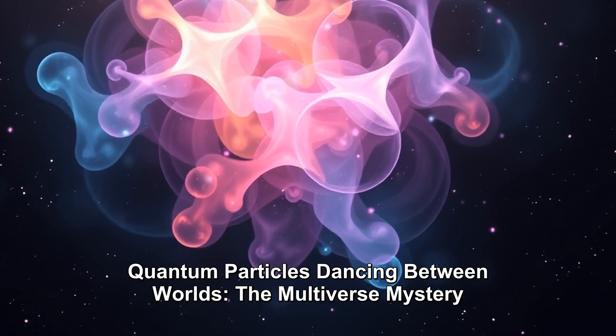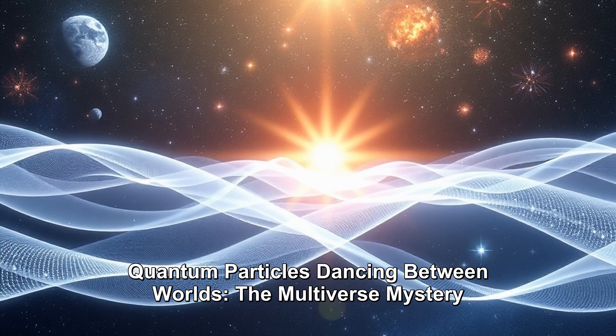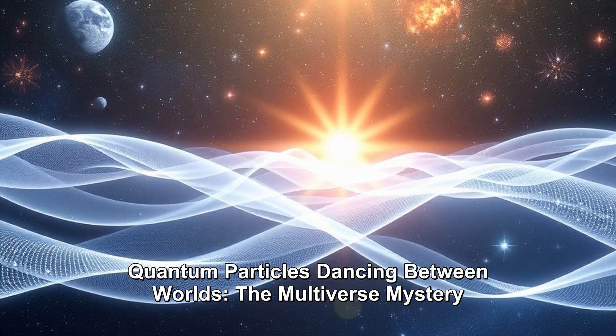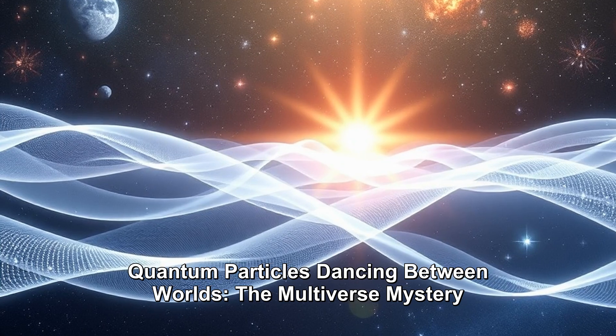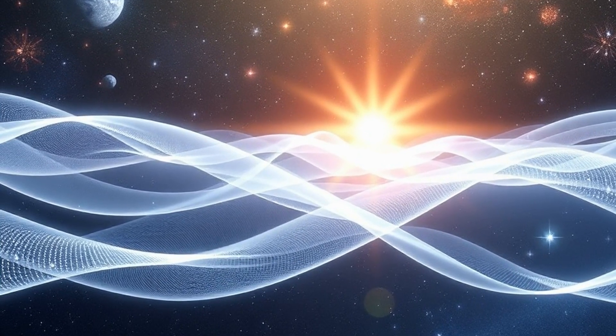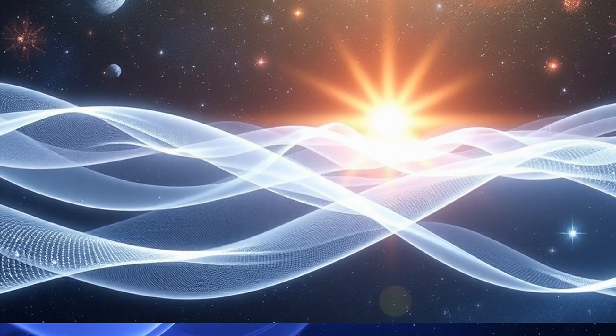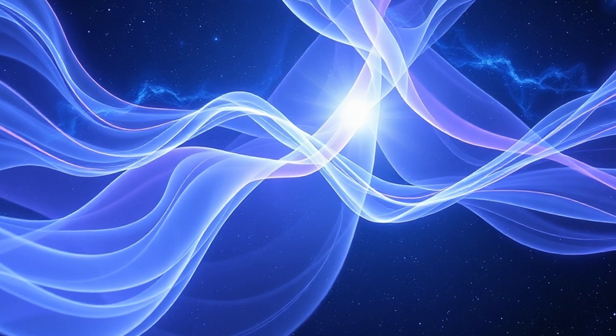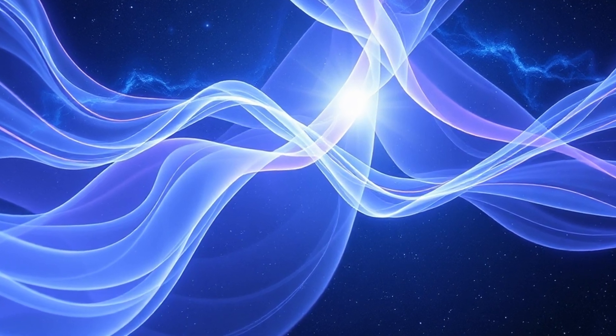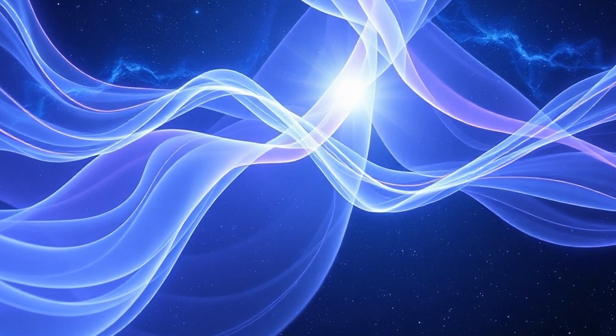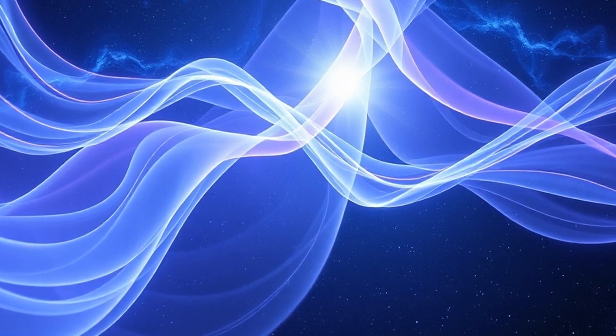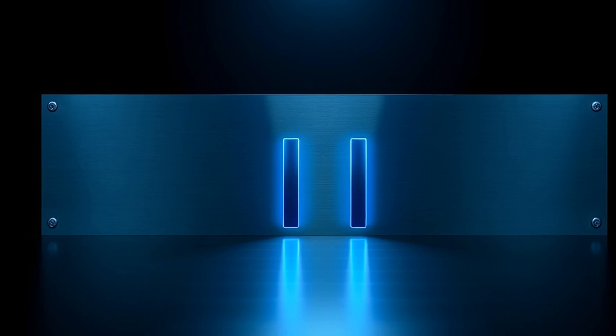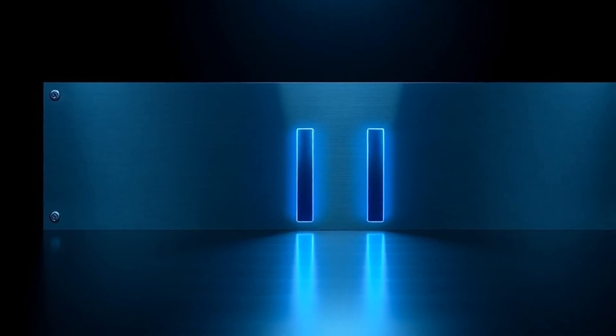The double-slit experiment might be the most amazing physics test ever done, and it gets even wilder when we think about parallel universes. Here's what happens. We shoot tiny particles, one at a time, through two slits in a screen. You'd expect them to make two simple lines on the back wall, right? But they don't. Instead, they create a striped pattern that only makes sense if each particle went through both slits at once.